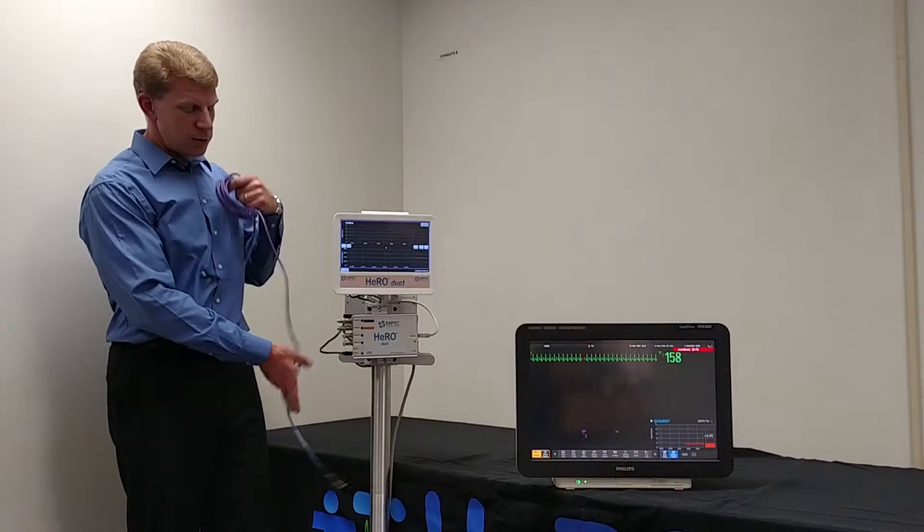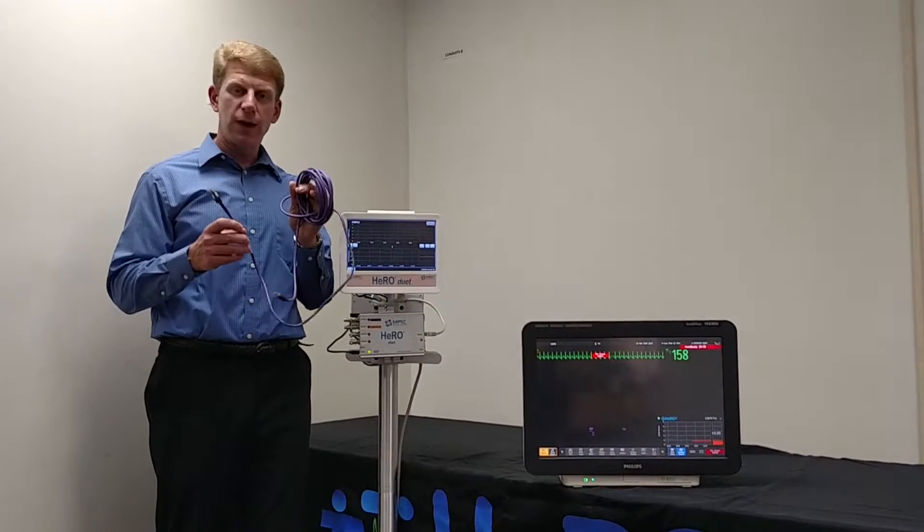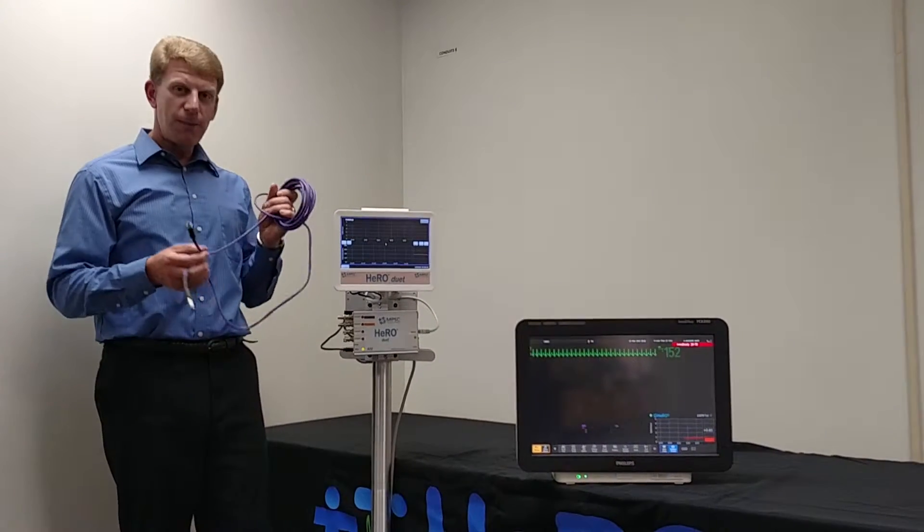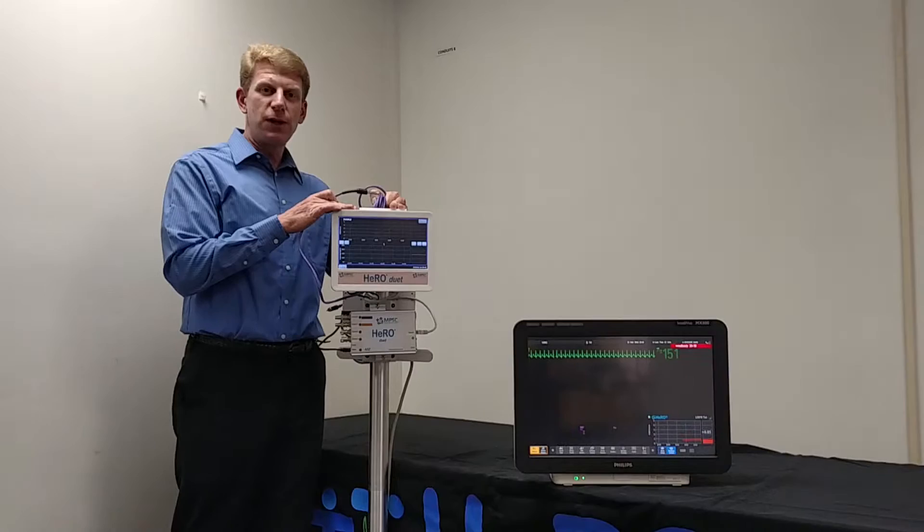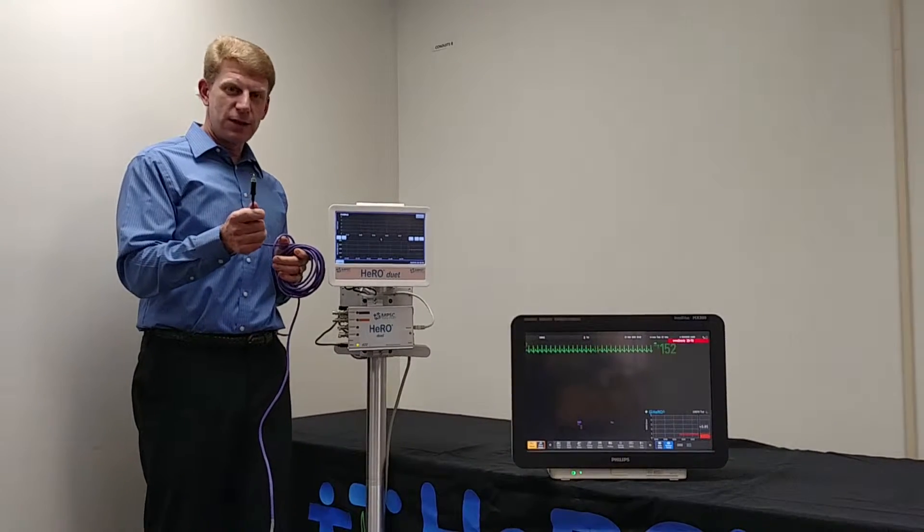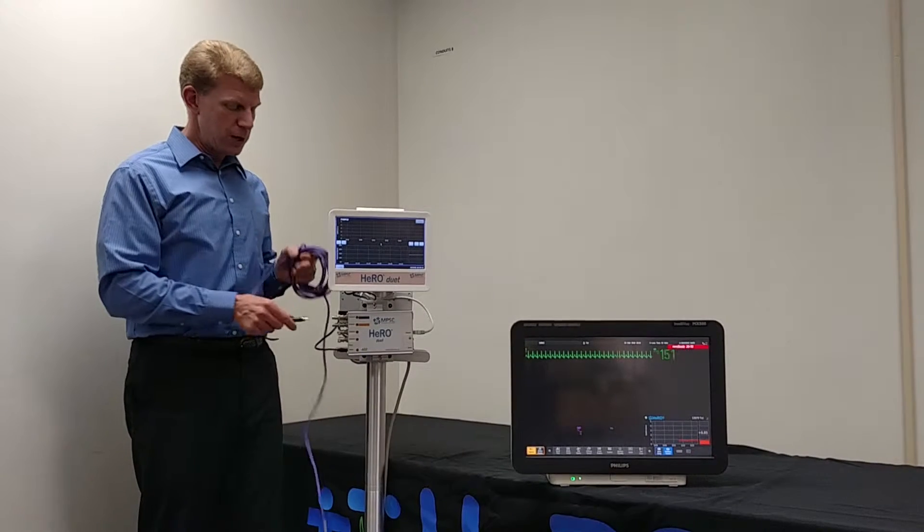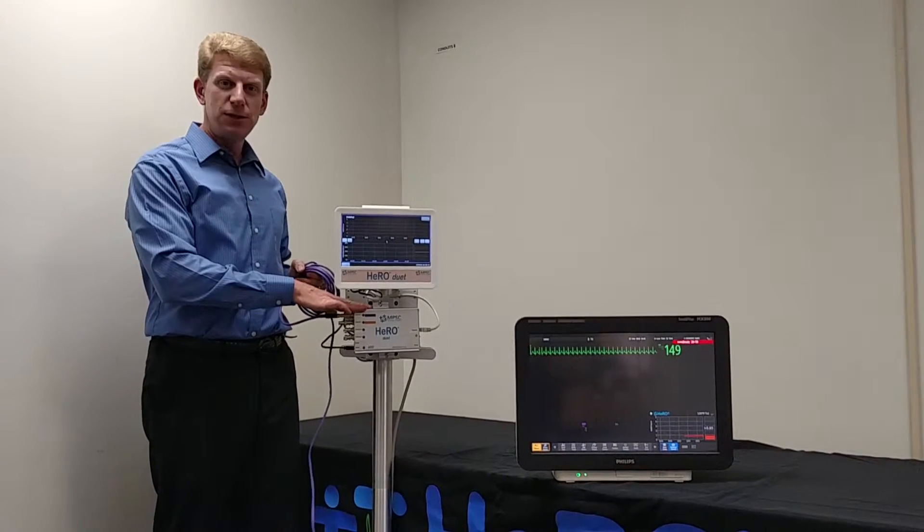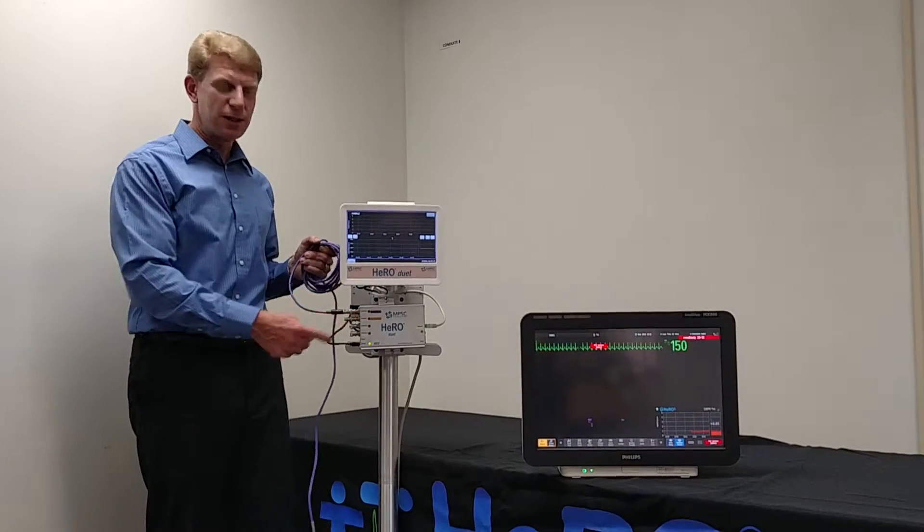For every type of monitor that we are compatible with, we provide special cables for it. This is a purple cable. This is always for your first channel. To hook up the actual Hero Solo or the Hero Duet to the monitor is very simple. There is one end that has an RCA plug, and they'll only go in one way. We plug the purple into the top channel on what we call the 82, which is this box, and there's a purple label associated with that.